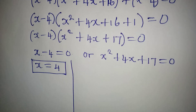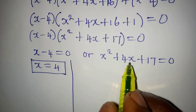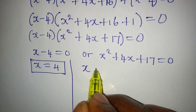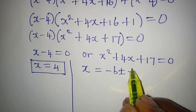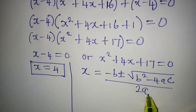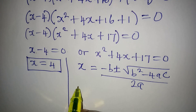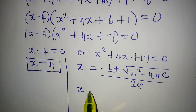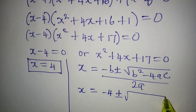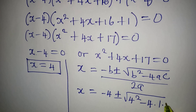To get the other values of x, we work with this quadratic equation using the quadratic formula: x equals minus b plus or minus square root of b squared minus 4ac, all over 2a. Our a is 1, our b is 4, and our c is 17. So x equals minus 4 plus or minus square root of 4 squared minus 4 times 1 times 17, all over 2.